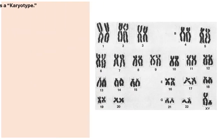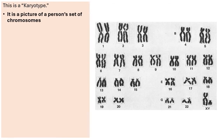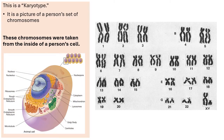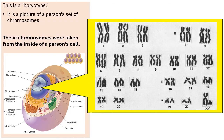First of all, this picture is called a karyotype, and it is a picture of a person's individual set of chromosomes. These chromosomes were taken from inside a person's cell. All of those chromosomes — those black fuzzy objects that you see — were at one time contained within the nucleus of a cell.